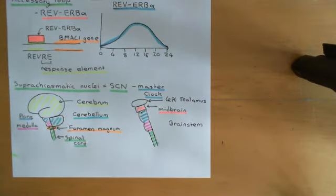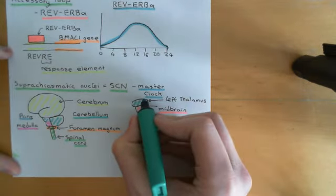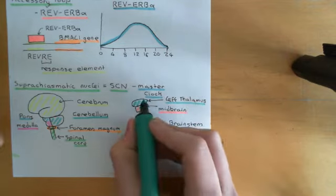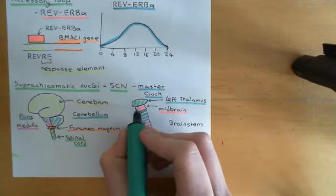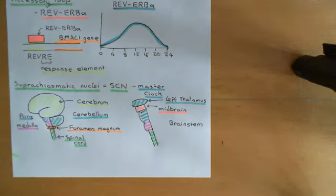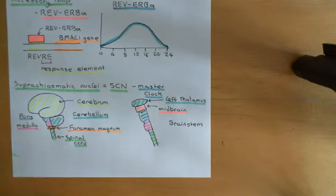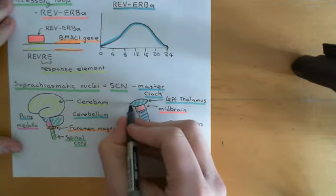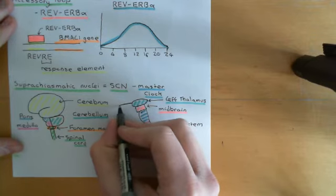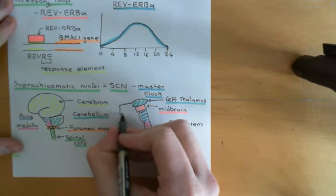The right thalamus sits on top of the right half of the midbrain, hidden behind the left thalamus in this view. We will draw a picture from above to see both thalami separately. The hypothalamus sits in front of the two thalami, and from the left-hand side it looks like this — with the pituitary gland dangling down from it and the mammillary body visible.